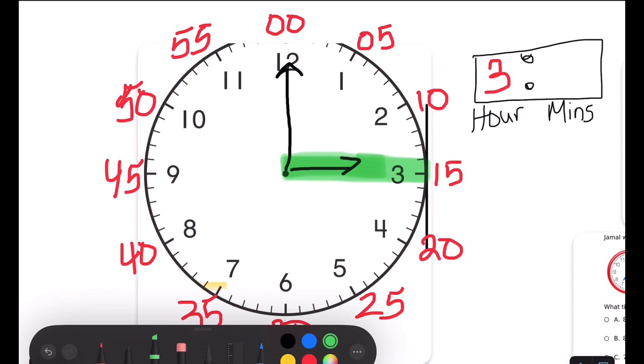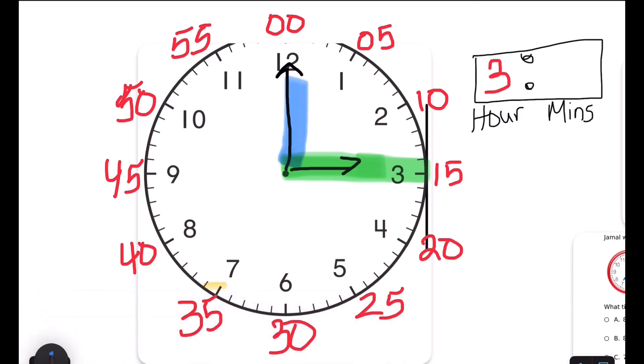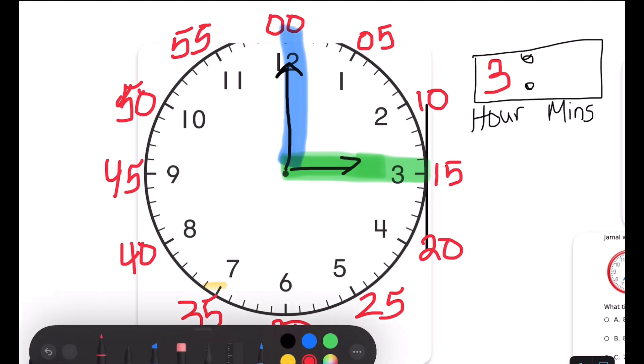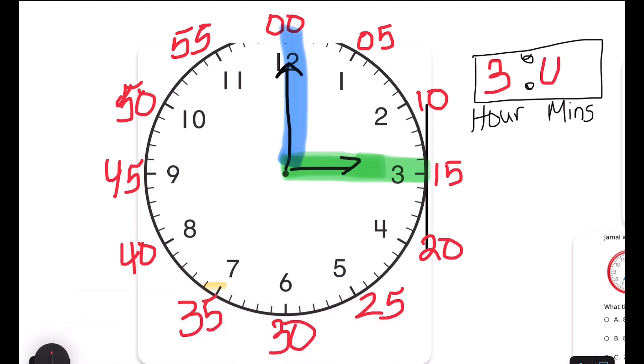And the long hand is so long that it counts up by fives. And as you can see, it's on 12, that means we have to write zero, zero. This is what 3 o'clock looks like on a clock.